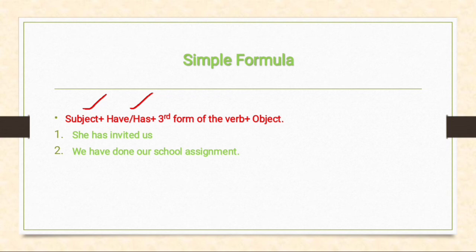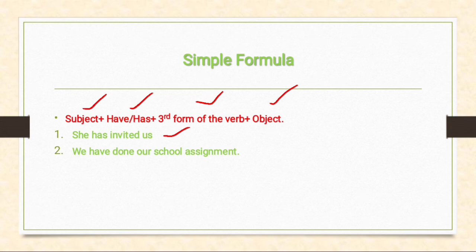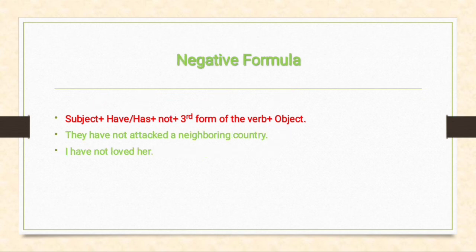Simple formula of present perfect tense: subject + helping verb (have/has) + third form of the verb + object. For example: 'She has invited us.' Here 'she' is the subject, 'has' is the helping verb — since the subject is 'she' we use 'has' — 'invited' is the third form of the verb (first form: invite, third form: invited), and 'us' is the object.